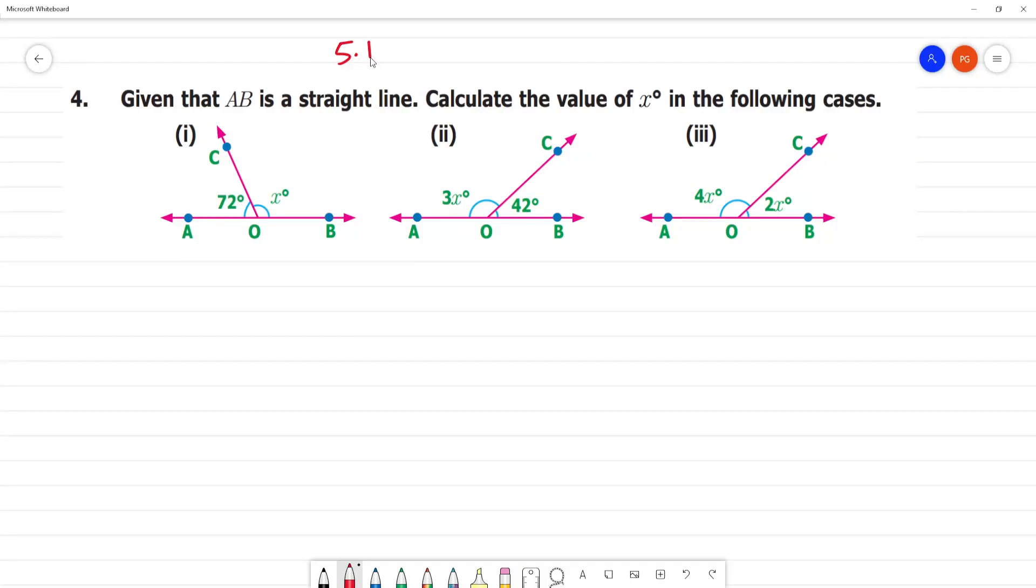Exercise 5.1: Given that AB is a straight line, calculate the value of x degree in the following. If you look at the straight line criteria, what do you think? A straight line means the angle will be equal to 180 degrees.